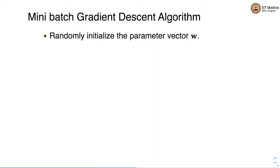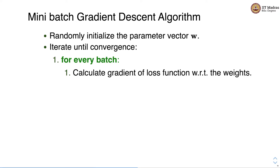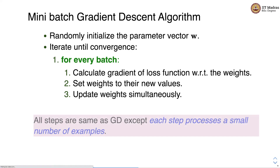Let us look at the mini-batch gradient descent algorithm. We first randomly initialize the parameter vector w, then iterate until convergence. For every batch of k examples, we calculate the gradient of the loss function with respect to the weights, set the weights to their new values, and update the weights simultaneously. These steps are exactly the same as gradient descent except that each step processes a small number of examples.